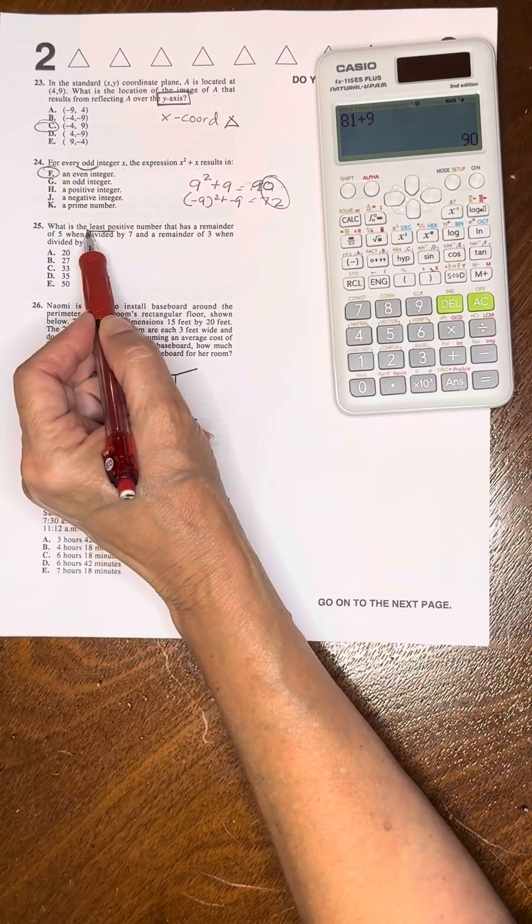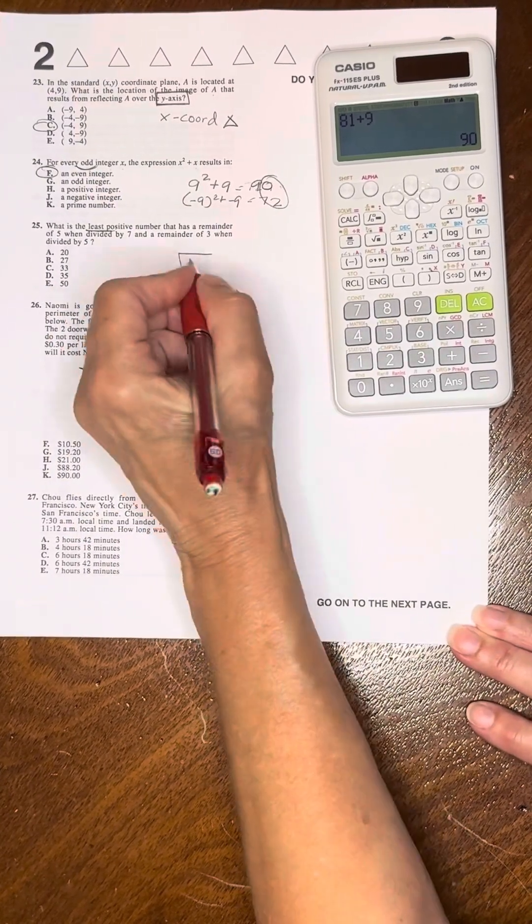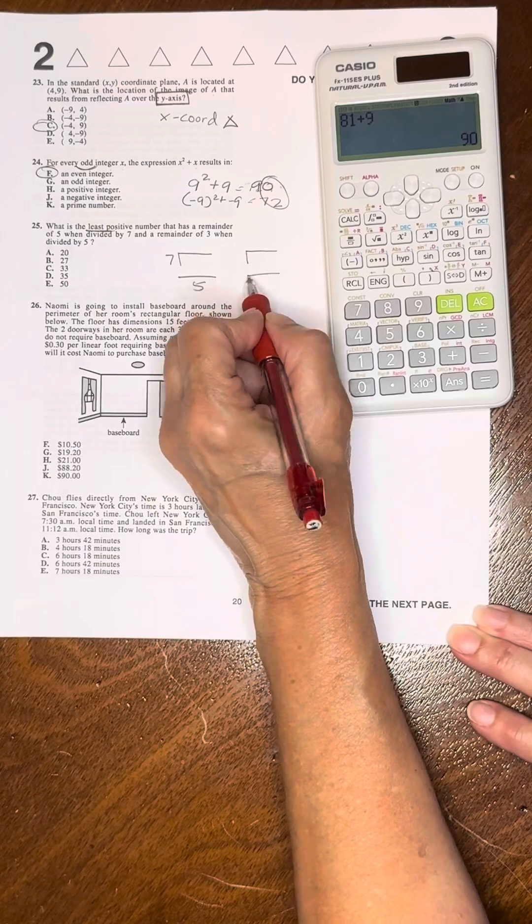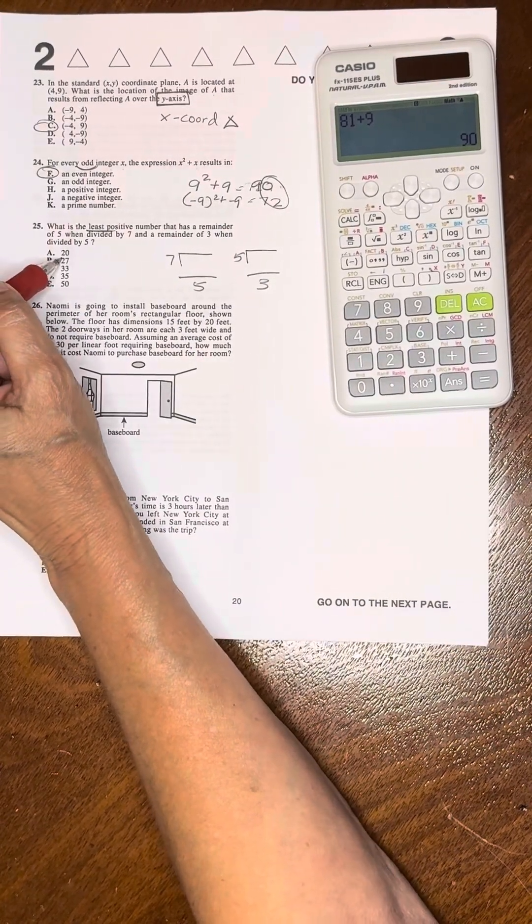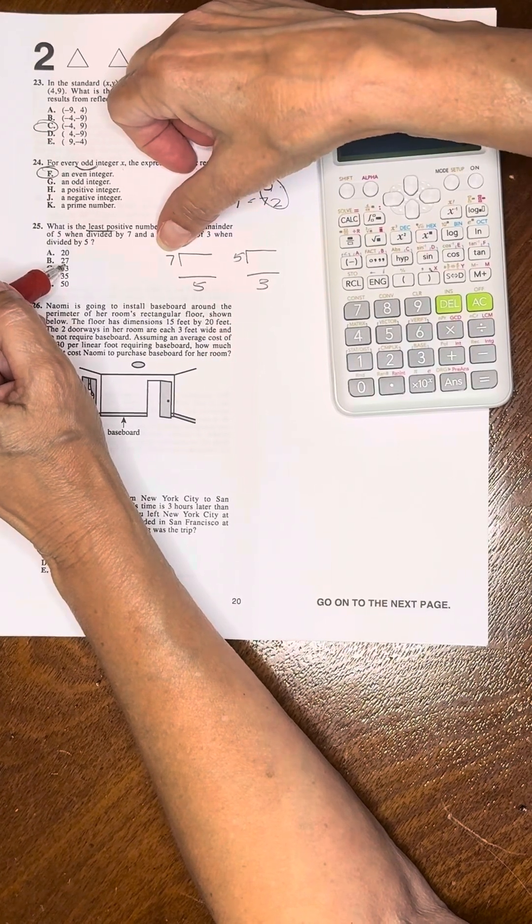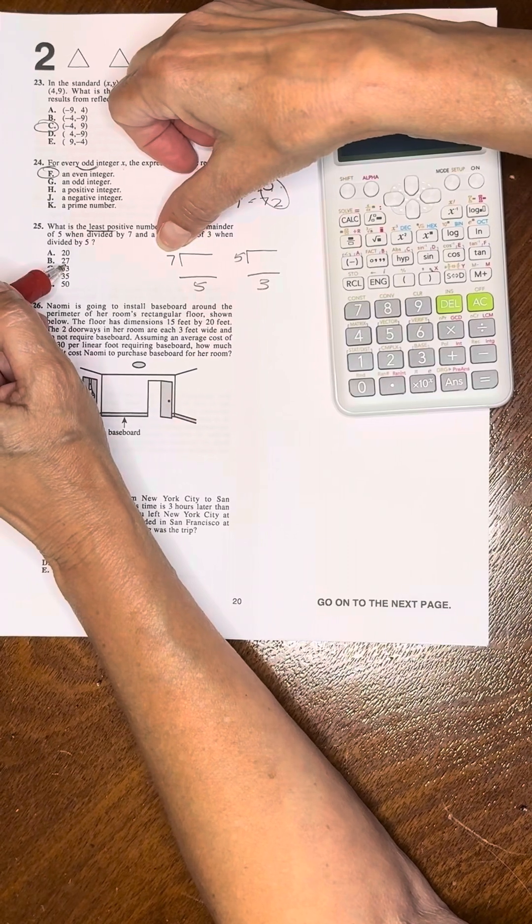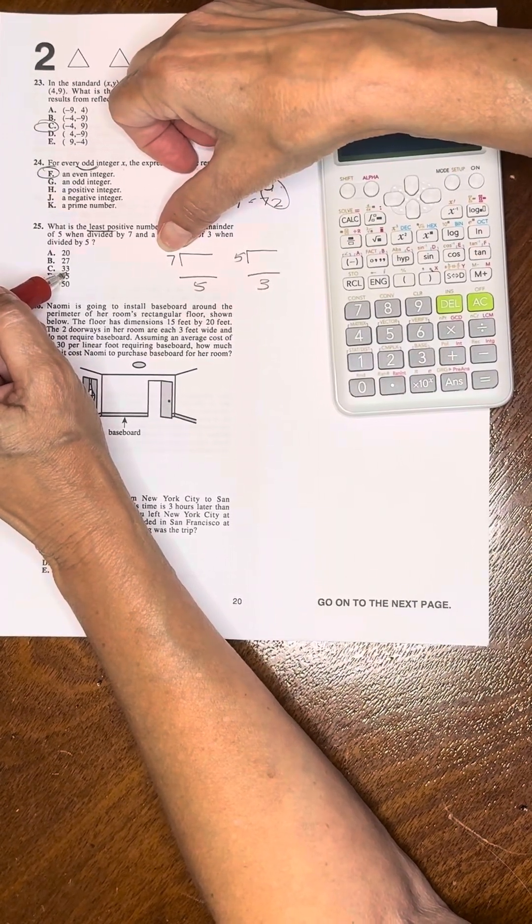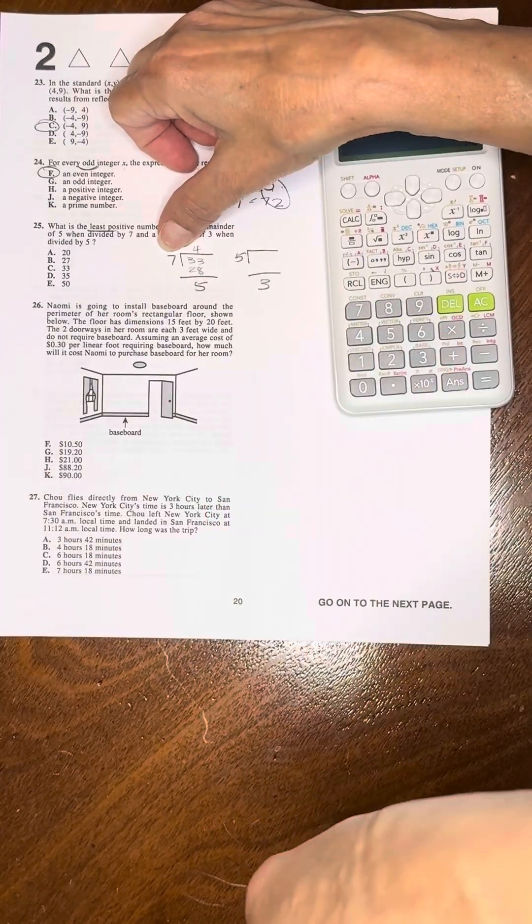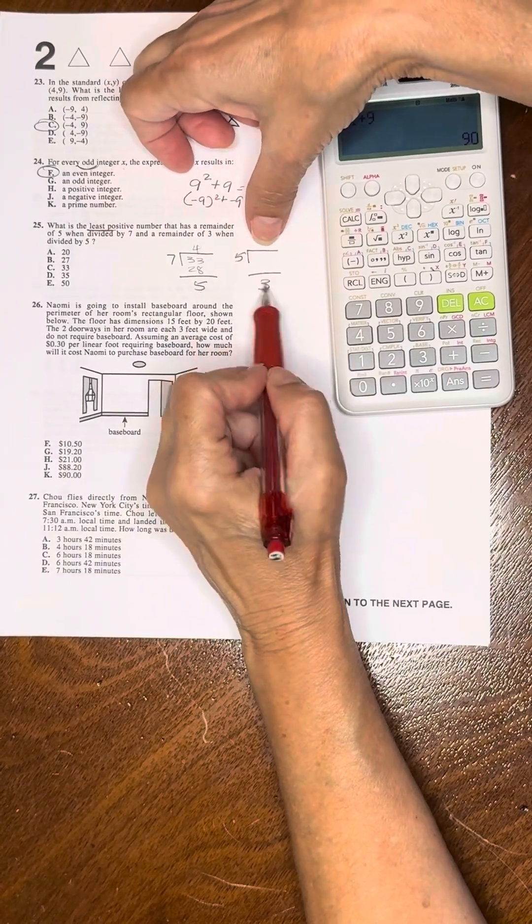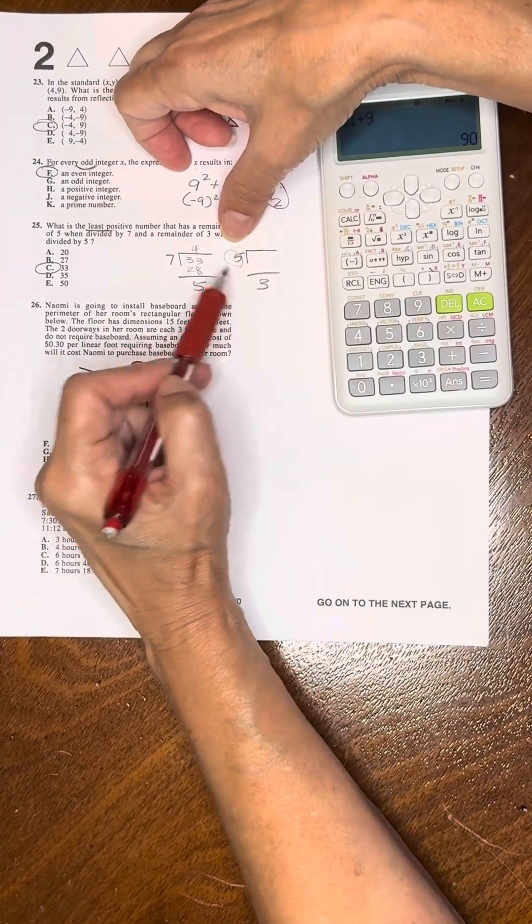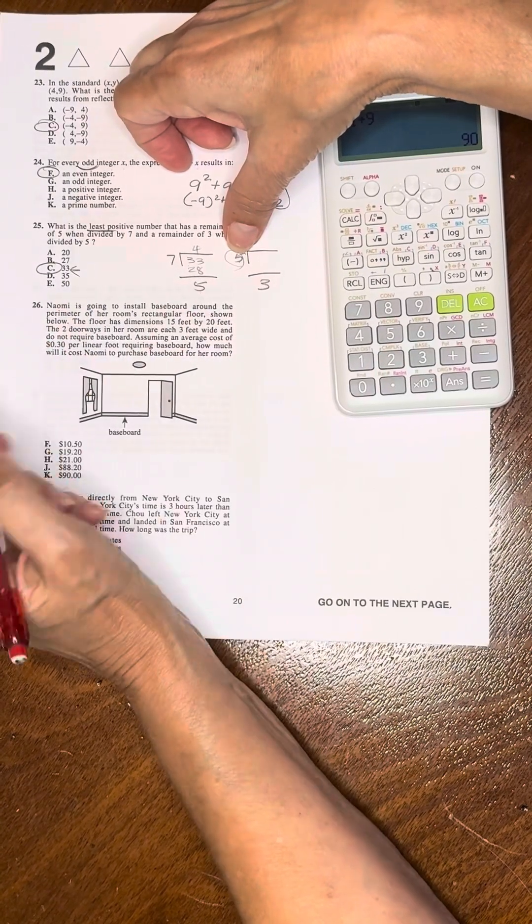Number 25: What is the least positive number that has a remainder of five when divided by seven and a remainder of three when divided by five? I just do this: 20 is going to have a remainder of six here, so not a remainder of five. 27, that's 21, that's going to have a remainder of six. 33, that's 28, 33 minus 28, that's going to have a remainder of five and a remainder of three. This one would have been easier to start with. You go to all your fives, because it's going to be multiples of five and it's just three over. And then make sure it works here.